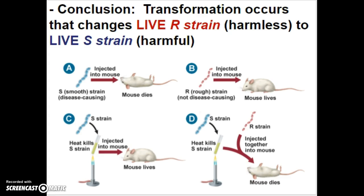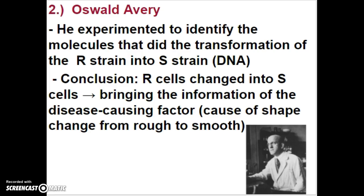Here is a pictorial review of the process. Injecting the smooth strain — the mouse dies. Injecting the rough strain — the mouse lives. Heat-killing the S strain and injecting it — the mouse lives, since there was no disease-causing factor. However, once those two items were mixed together, a transformation process occurred. Griffith wasn't sure exactly how this happened, and as with all good scientific experiments, somebody would take the idea and run with it.